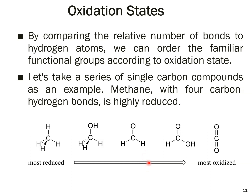What are oxidation states? By comparing the relative number of bonds to hydrogen and oxygen, we can order functional groups by oxidation state. Taking single-carbon compounds as an example: methane on the far left has four hydrogen atoms attached to carbon and no bonds to oxygen — it is in the most reduced form.